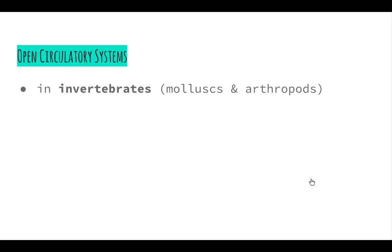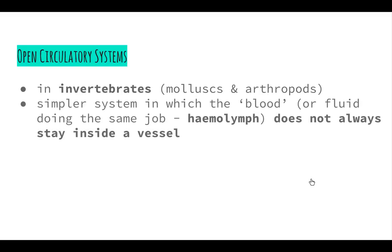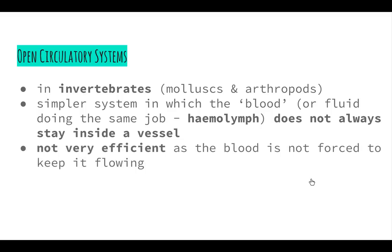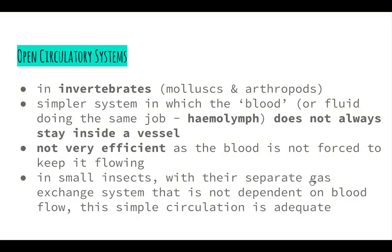Open circulatory systems, on the other hand, are found in invertebrates — simple organisms such as mollusks and arthropods, including insects, snails, and crabs. It is a simpler system in which the fluid, called hemolymph, does not always stay inside a vessel. It is not very efficient, as there is no real pumping mechanism and the hemolymph flows in any direction. In small insects with a separate gas exchange system not dependent on blood flow, this simple circulation is adequate, as they don't require hemolymph to travel large distances.